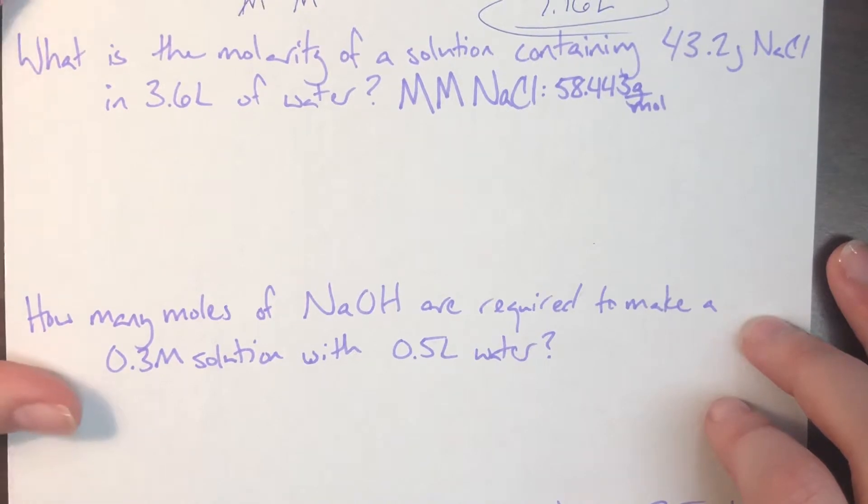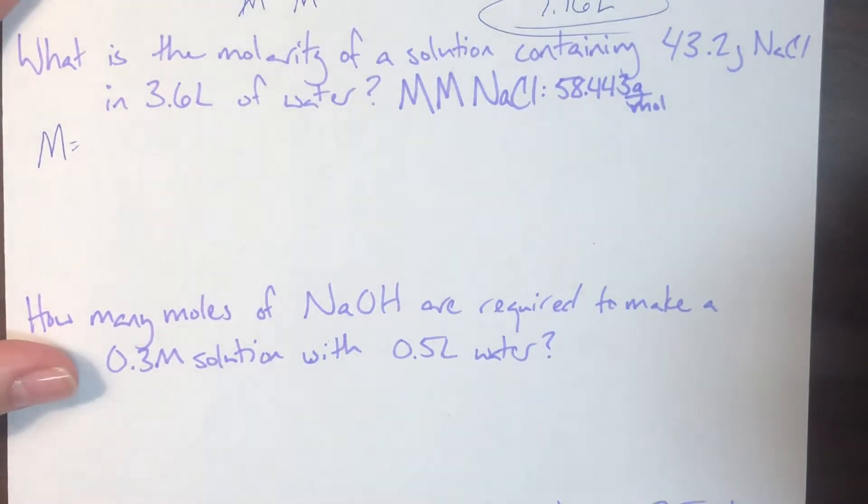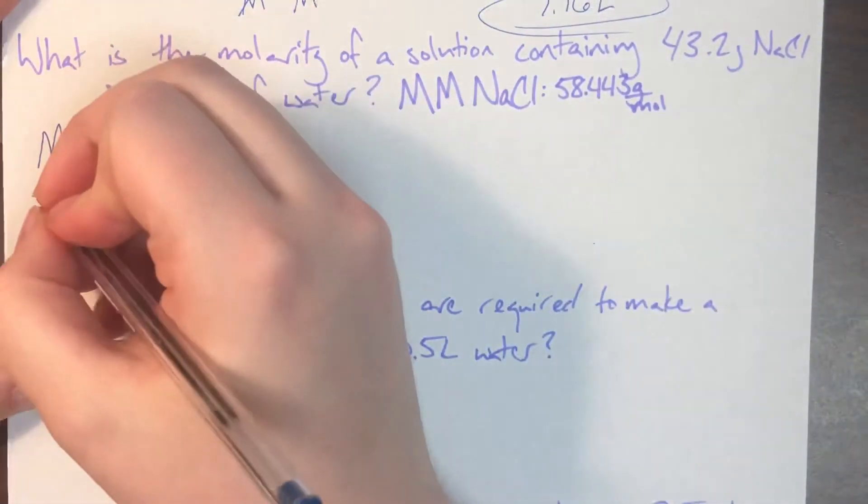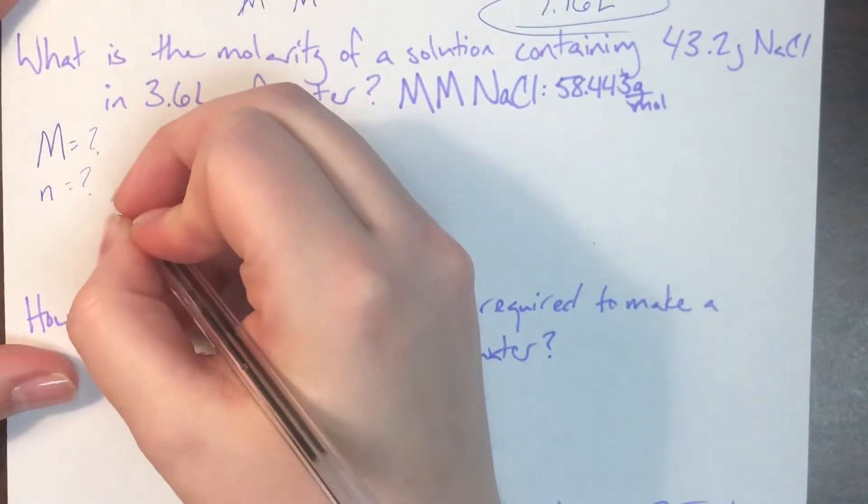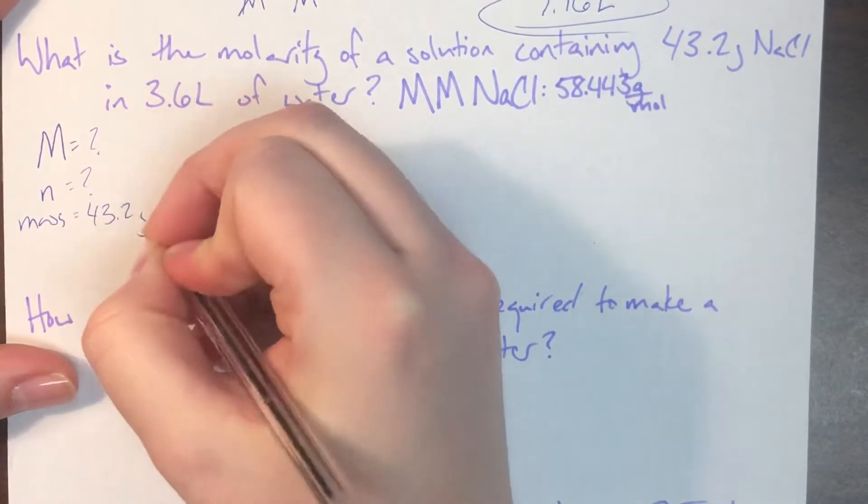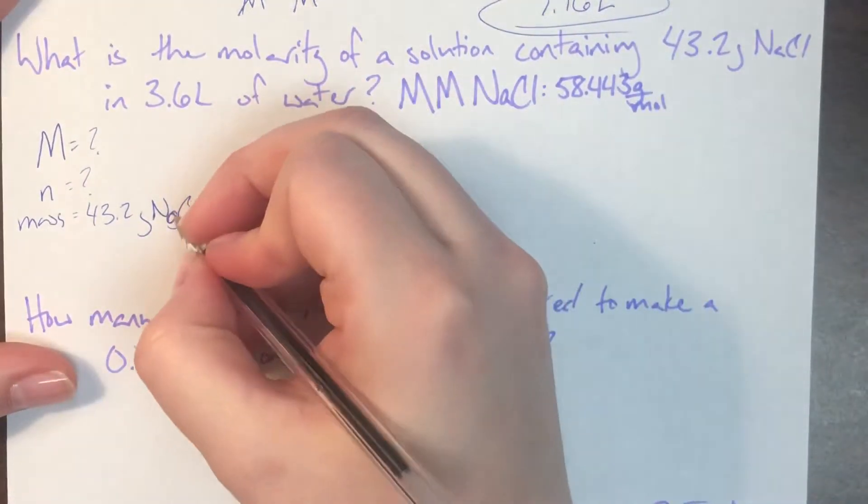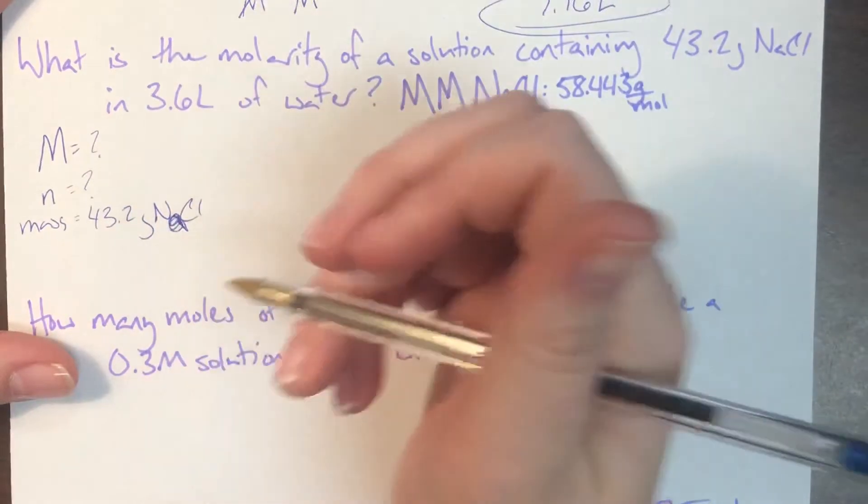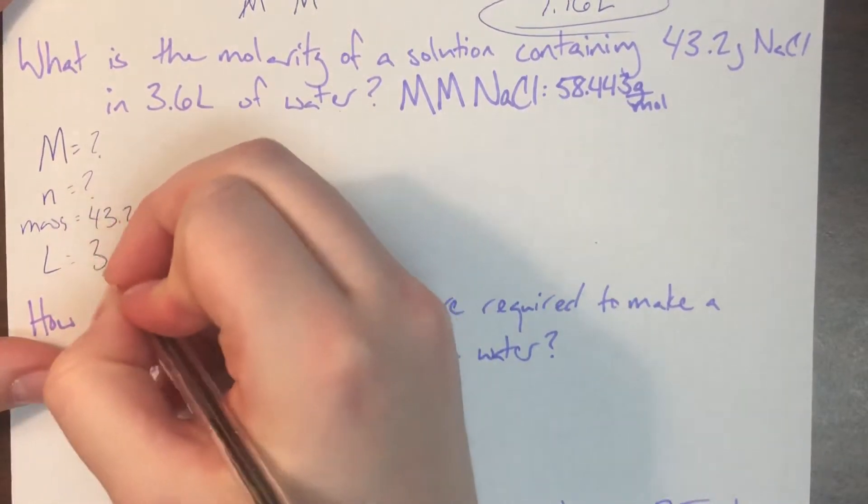Our second example says, what is the molarity? So I know that I am looking for my molarity, my capital M, of a solution that contains 43.2 grams of sodium chloride. So I don't actually have my N yet, but I do have a mass that I can end up converting into N. And then I'm going to have my liters of solvent, which they tell me is water this time, and that's going to be 3.6 liters.